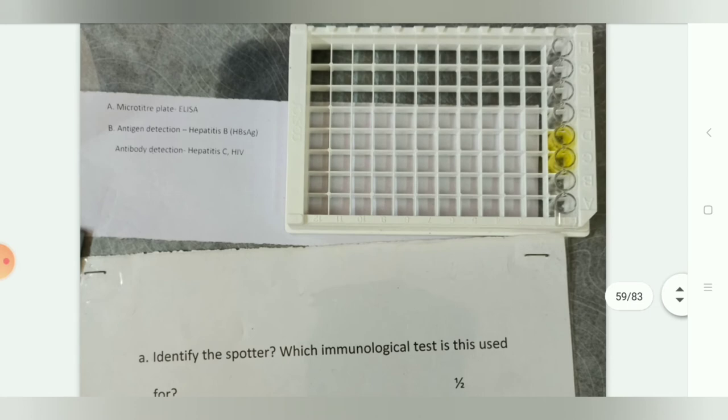The anaerobic jar is also known as the McIntosh and Fildes jar, used to produce anaerobic conditions. It is used for organisms such as Clostridium and Actinomyces.